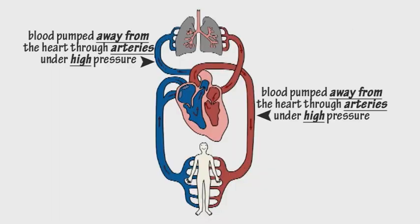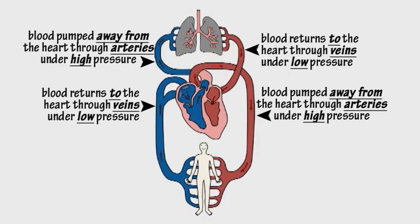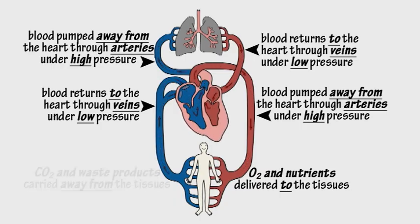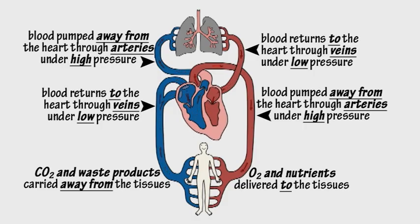The heart pumps blood under pressure out through your arteries and blood drains back under lower pressure to the heart through your veins. The purpose of this is to deliver oxygen and nutrients in the blood to the tissues in every part of the body and carry away carbon dioxide and other waste products.